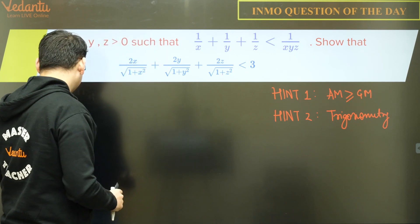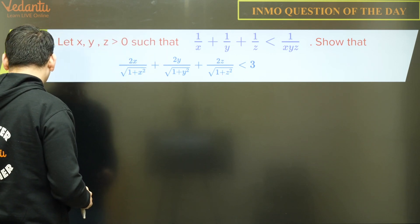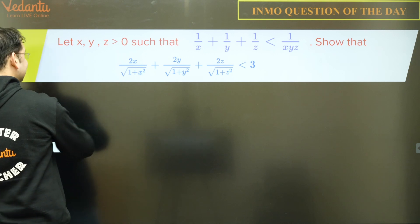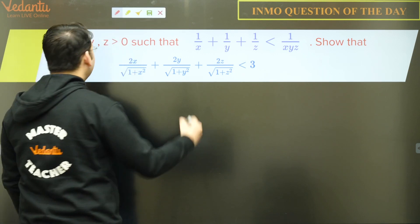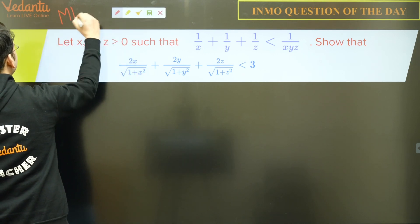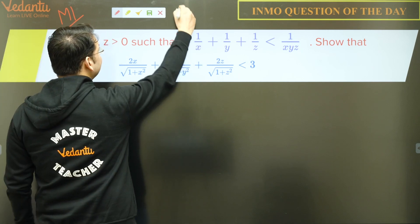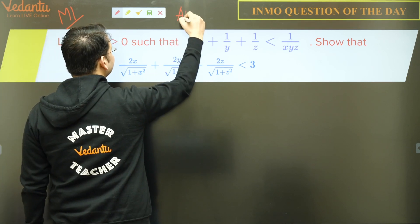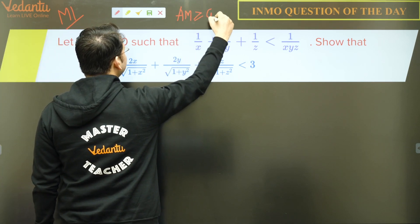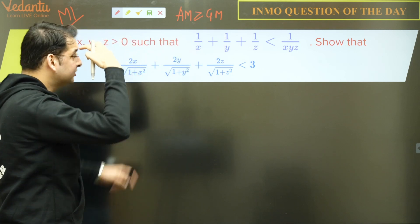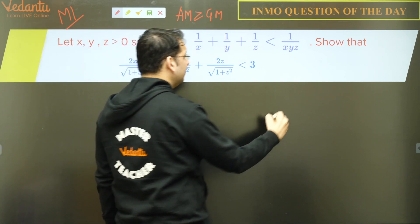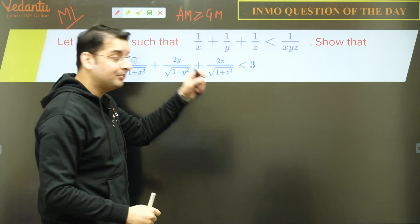Let us start the solution. Approach one: AM-GM. So what is given to us: 1/x + 1/y + 1/z is less than 1/(xyz). If we multiply the entire inequality by xyz, we get xy + yz + zx is less than 1.